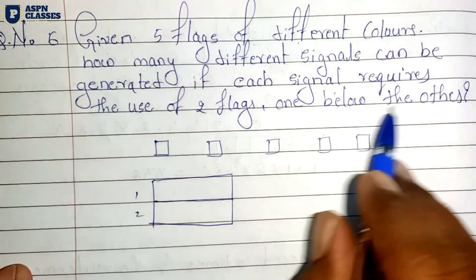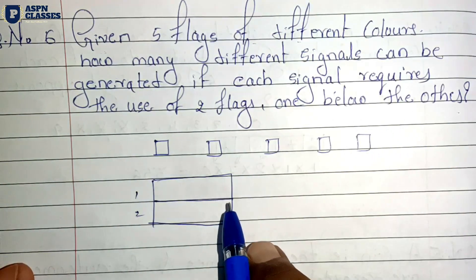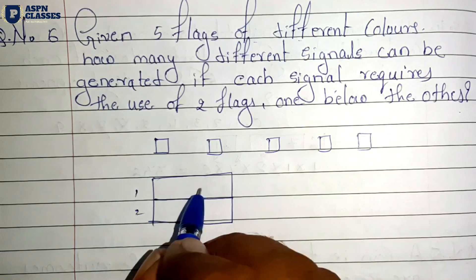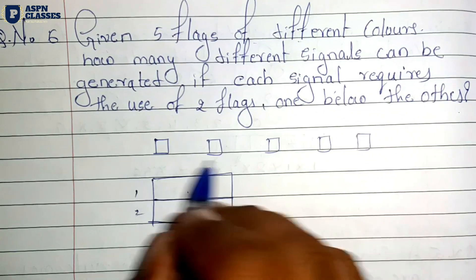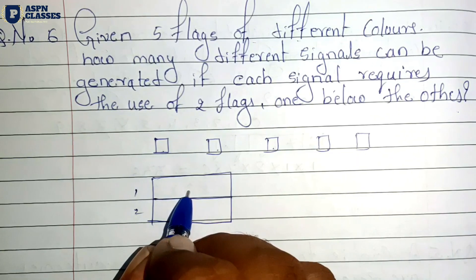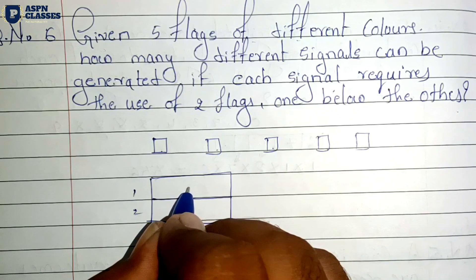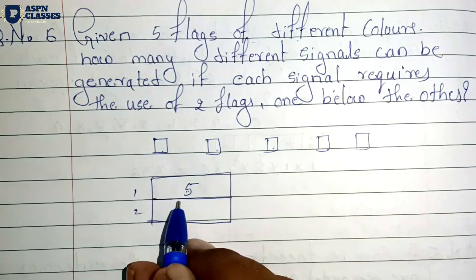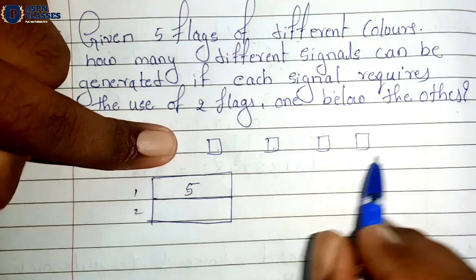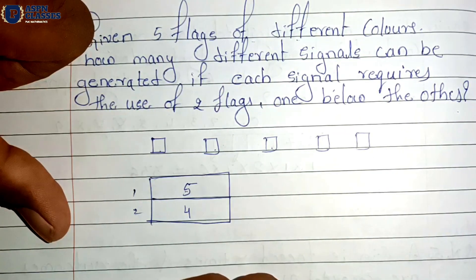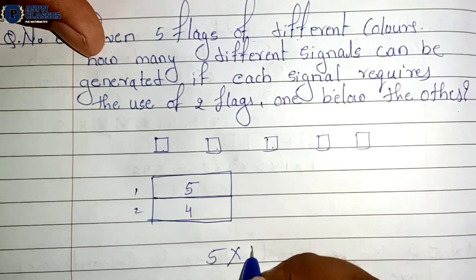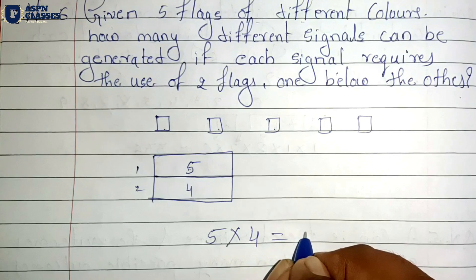The condition is that the two flags must be different colors. For the first flag position, we have 5 different colors to choose from. After selecting the first flag, we cannot repeat it, so for the second flag we have 4 choices. By the multiplication principle: 5 into 4 equals 20.